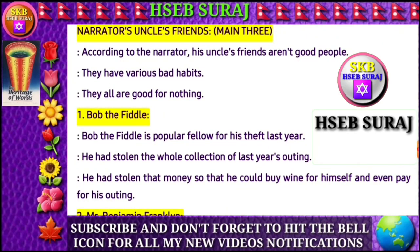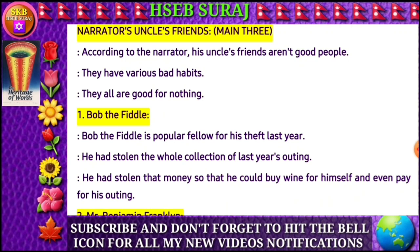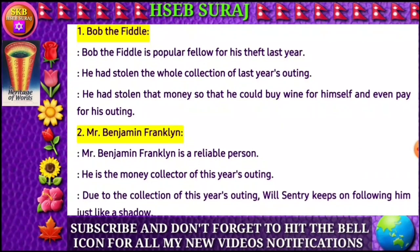Now narrator's uncle's friends — there are three. According to the narrator, his uncle's friends aren't good people. They have various bad habits. They are all good for nothing. Number 1: Bob the Fidel. Bob the Fidel is a popular fellow known for his theft last year. He had stolen the whole collection of last year's outing money so that he could buy wine for himself and even pay for his outing.